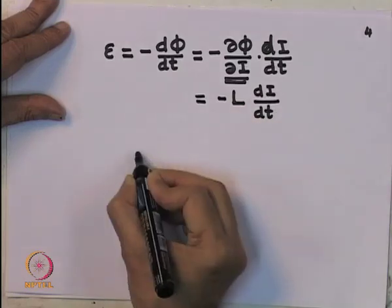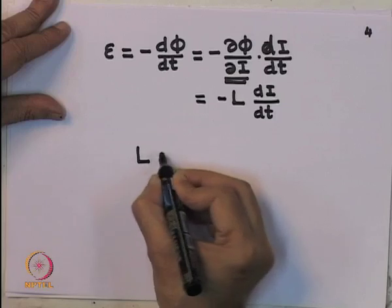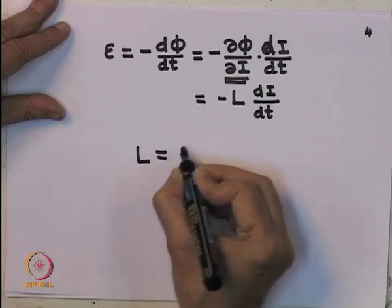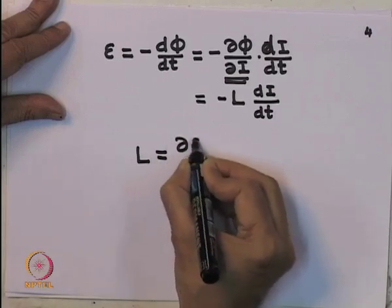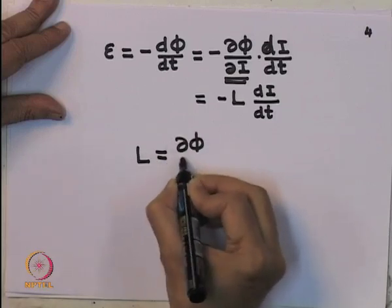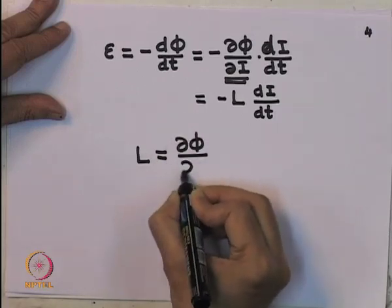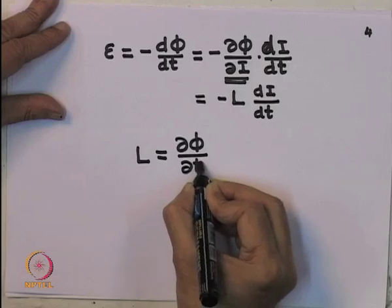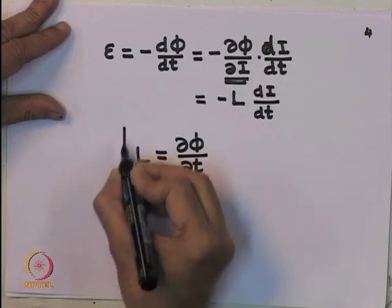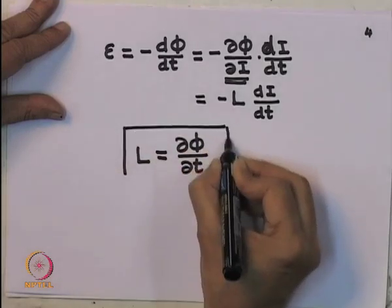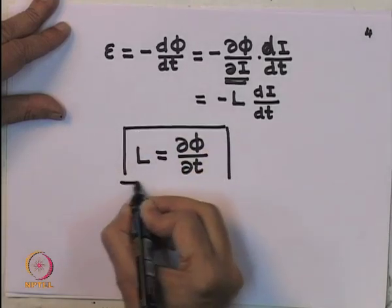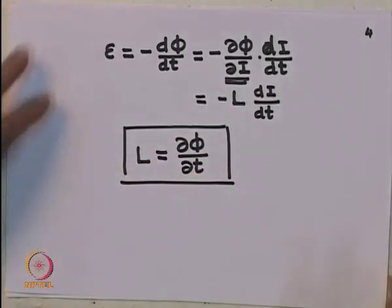When you change the current through a loop, it leads to a changing magnetic field produced by that loop, which results in a changing magnetic flux through the loop itself — a self-induced EMF. This EMF is minus dφ/dt, which we write as minus (dφ/dI)(dI/dt). This proportionality constant — the rate of change of flux through a circuit with respect to the changing current in that circuit itself — is known as self-inductance, denoted by L.